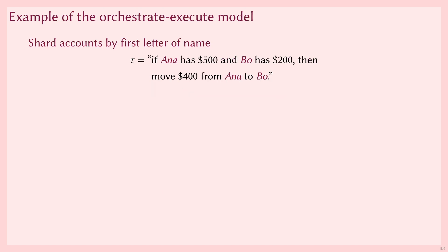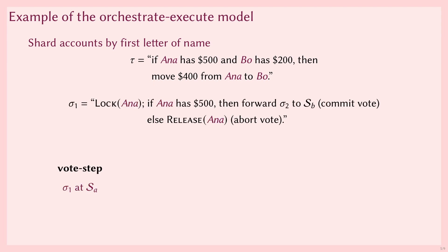To illustrate the orchestrate-execute model, we look at a simple example. Consider the transaction that transfers $500 from Anna at shard A to Bo at shard B, if both Anna and Bo have sufficient funds. The first shard step is a vote step at shard A. This vote step locks Anna's account, checks whether Anna has sufficient funds, and if this holds, the step instructs shard B to execute the second shard step. Otherwise, the transaction can be aborted and we simply release the lock on Anna.